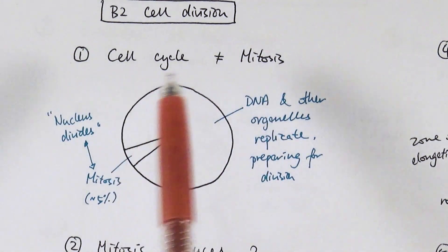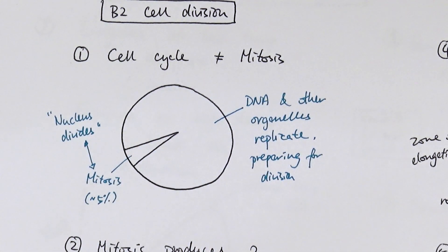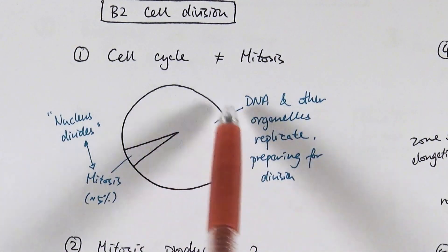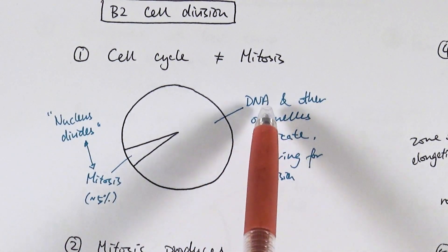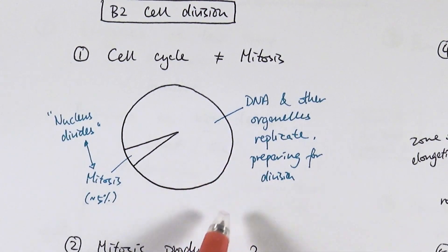And the rest of the time within the cell cycle is actually what we call interphase, but that's a new word that you will learn in A-level. And during this whole rest of the time when it's not doing mitosis, it's preparing itself for mitosis. So DNA and other organelles replicate preparing for the division because you need two things, you need two copies of the same thing in order when you divide you will get the same thing on each side. So be aware that they are different.